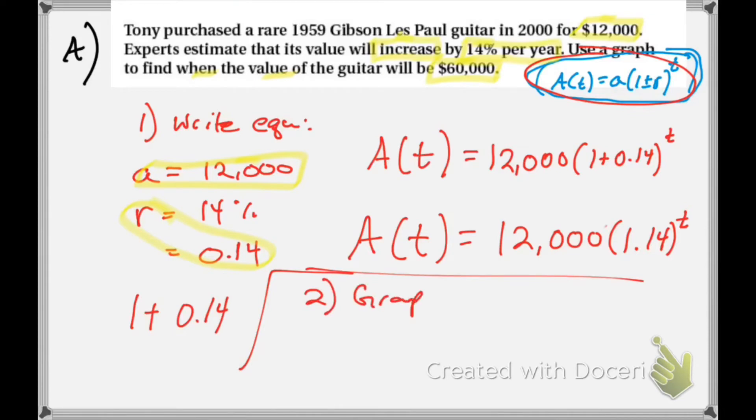Now step two, let's graph on my calculator. And we're going to be looking for when, so we're looking for time. When is the value of the guitar going to be equal to $60,000?